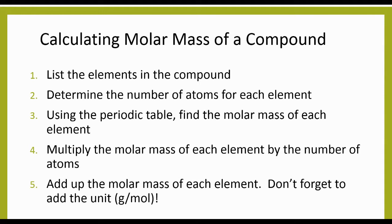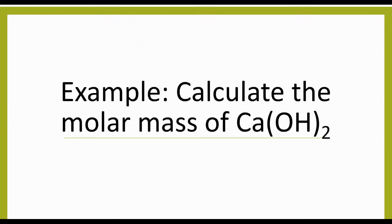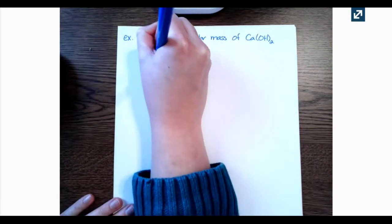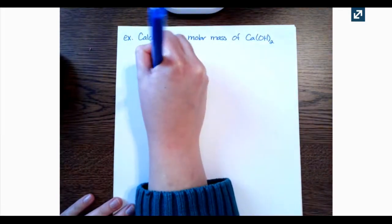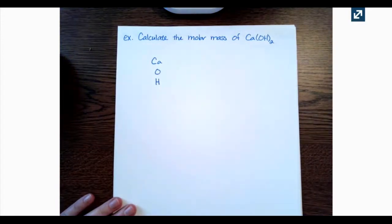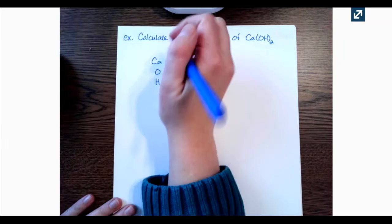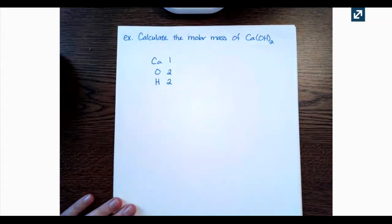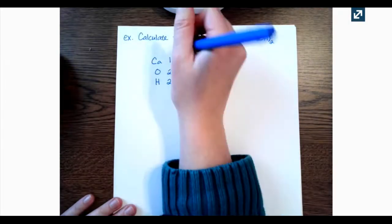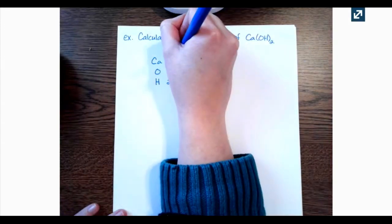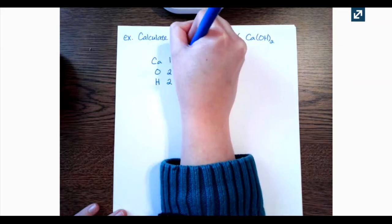We're going to calculate the molar mass of Ca(OH)2, which is calcium hydroxide. The first thing I like to do is list all of my atoms. So I have calcium, oxygen, and hydrogen. Then I list the number of each. I have one calcium. The two outside the parentheses applies to everything inside, so I have two oxygens and two hydrogens. Then I write down the masses from the periodic table — different periodic tables can have slightly different values, and that's okay.